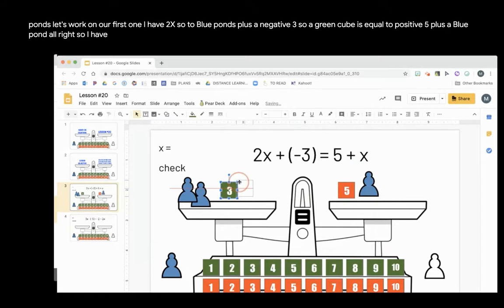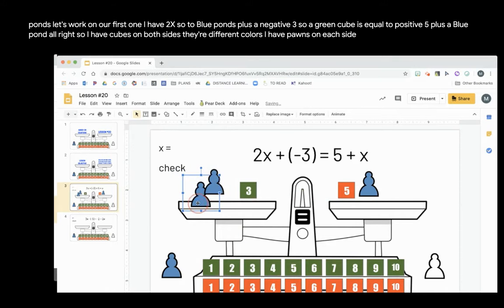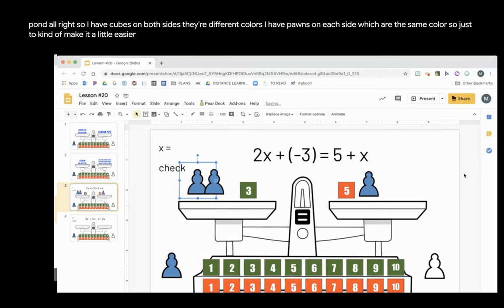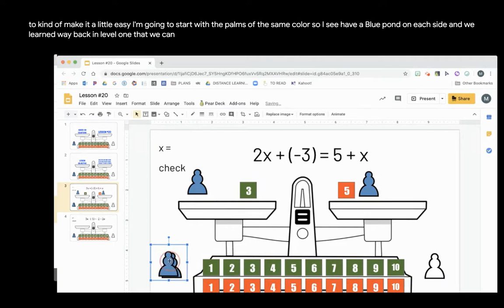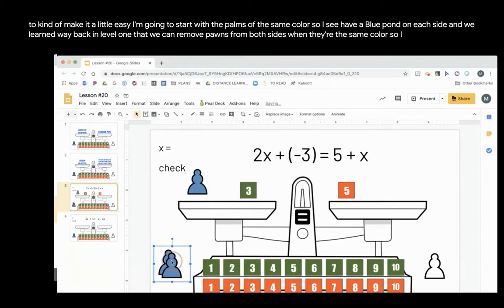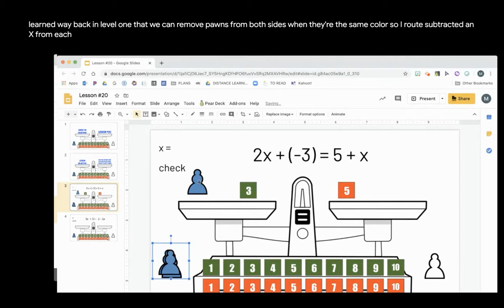I have cubes on both sides. They're different colors. I have pawns on each side which are the same color. So to make it a little easier, I'm going to start with the pawns of the same color. I have a blue pawn on each side, and we learned way back in level 1 that we can remove pawns from both sides when they're the same color. So I subtracted an x from each side.